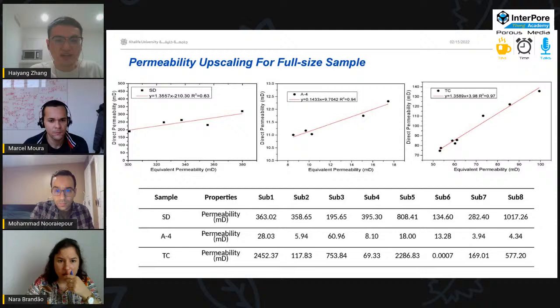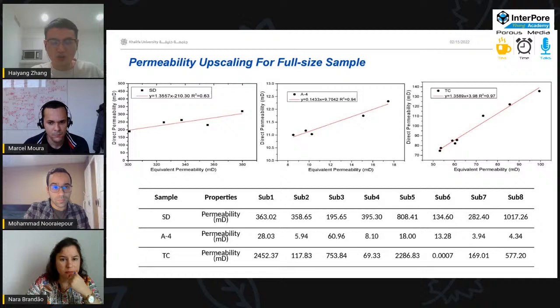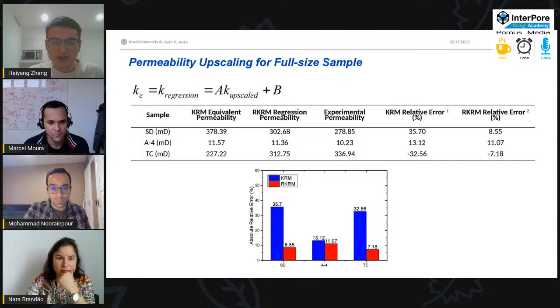So, similarly, we slide the samples in z-direction and get these regression curves. X-axis is the equivalent permeability and y-axis is the direct permeability. And we also calculate each part of the whole full-size sample. And we calculate the permeability of each part. And this table shows the results. So, we use the original renormalization method equation to calculate the equivalent permeability. And use the regression equation in the last slide to calculate the regression permeability. And compared with the experimental permeability. So, you can find that the relative errors are low.